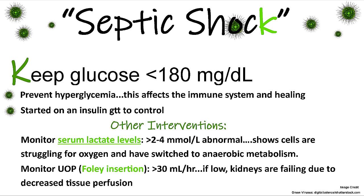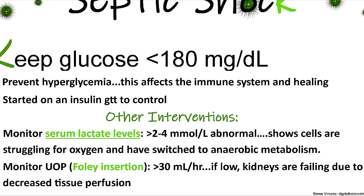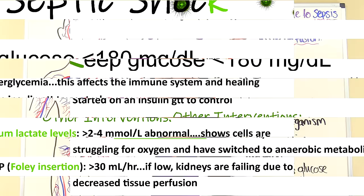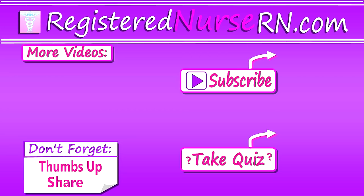Other important interventions include monitoring serum lactate — levels greater than 2 to 4 millimoles per liter are abnormal and indicate cells are struggling for oxygen and have switched to anaerobic metabolism. Monitor urinary output with a Foley catheter, ensuring the kidneys are producing at least 30 mL per hour — low output indicates kidney failure due to decreased tissue perfusion. That wraps up this review of septic shock. Thank you for watching — don't forget to take the free quiz and subscribe to our channel for more videos.